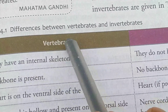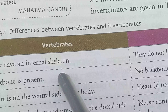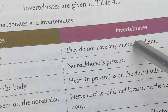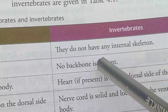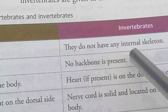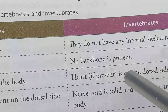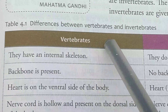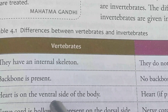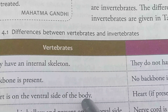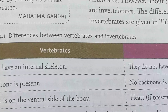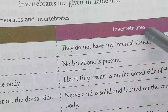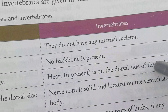So, the basic difference: vertebrates possess a proper internal skeleton as well as a backbone. In the case of invertebrates, they have no internal skeleton — backbone is absent. In vertebrates, the heart is on the ventral side of the body, while in invertebrates, the heart is on the dorsal side of the body.